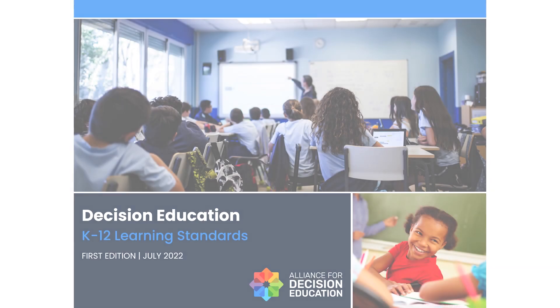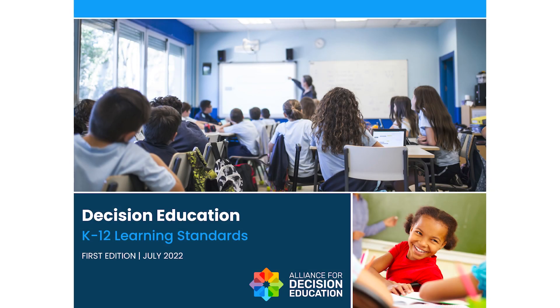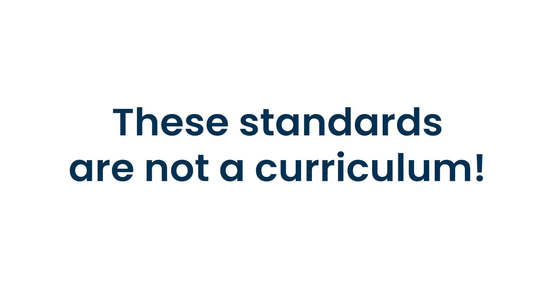The first edition of the decision education learning standards were written by educators and researchers and provide a framework for what K-12 students should know and be able to do throughout each grade band when it comes to being effective decision makers. But the standards are not a curriculum—they indicate what students should know and be able to do, but they are not meant to convey how to teach it.